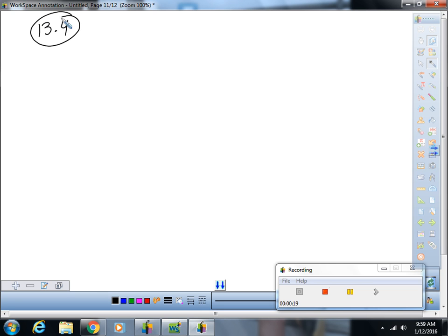Okay, it says, find the mass of the lamina described by the inequalities, given that the density function is rho. This cursive P is rho, I think. Yeah, it's Greek. Rho of xy is x, y.